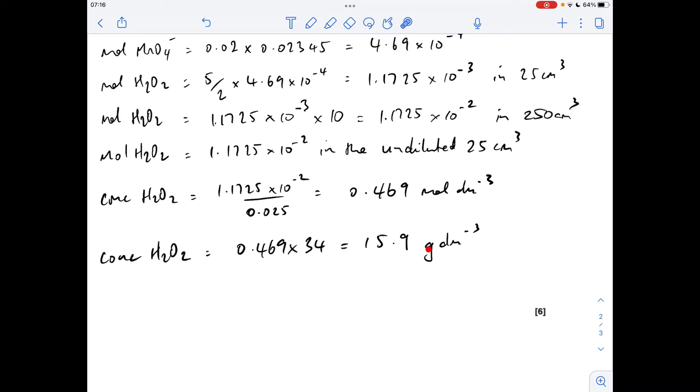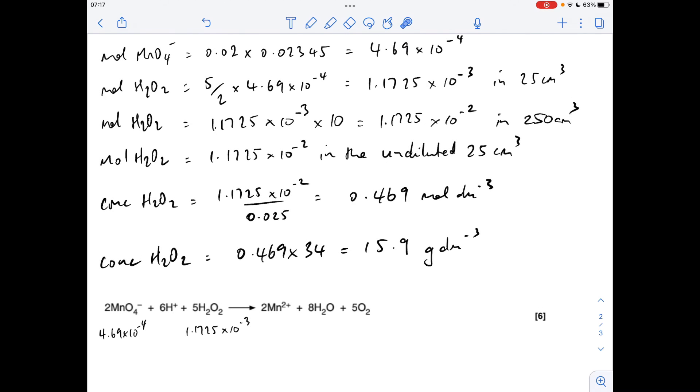And the concentration in grams per decimeter cubed, so the moles times the MR, 15.9. And then to finish off, we've got to calculate the volume of oxygen that's being produced by this reaction at RTP.